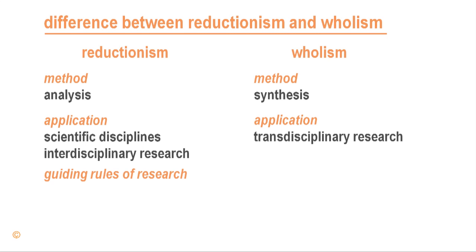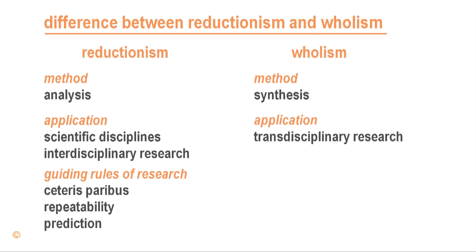The first guiding rule of reductionist research is ceteris paribus, which is Latin for 'other things being equal.' This means that experiments exclude a changing environment — in other words, variables in the environment are kept constant. This allows the researcher to repeat experiments in exactly the same way and to detect stable behavior in the variables being observed, which leads to predictable outcomes.